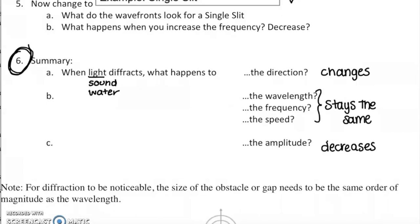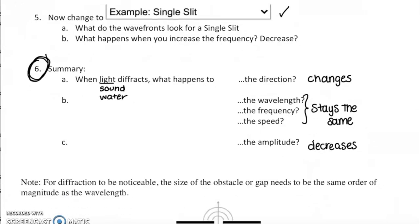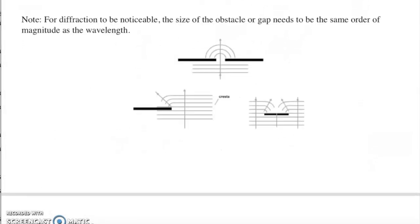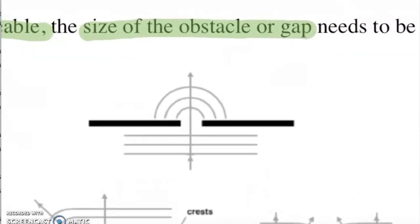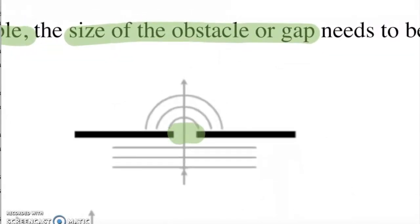The wavelength and speed changed in refraction as waves pass into a new medium. Additionally, the amplitude of the wave is going to decrease — you can see in the simulation where it got dimmer or less intense the farther away you go. It is important to note that in order for diffraction to be noticeable, the size of the obstacle or the gap needs to be the same order of magnitude as the wavelength of that wave.